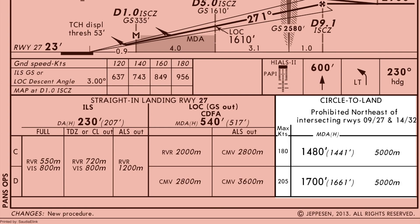This part of the chart shows the minima for a circle-to-land procedure. For a category C aircraft performing a circle-to-land, the MDA will be 1,480 feet and a minimum visibility of 5,000 meters is required. For a category D aircraft, the MDA is 1,700 feet and the same visibility of 5 kilometers is required.